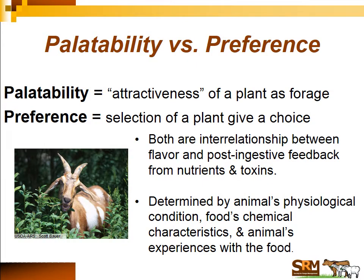Before we get going I need to distinguish between a couple of terms: palatability and preference. Palatability is a plant term — it's related to the attractiveness of a plant to an animal, a pleasant flavor or energy content. When you say a plant is palatable, you're saying that animals find it attractive or they like it. Preference, on the other hand, is an animal term. When you give an animal a choice between plants, the one they choose — that action of choosing — is called a preference.